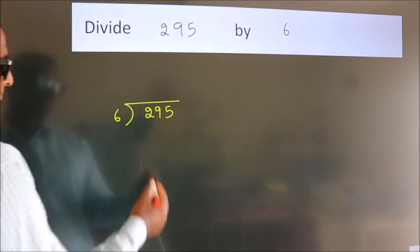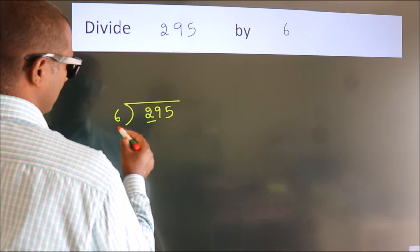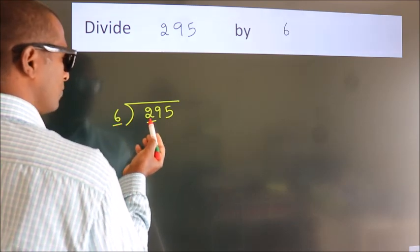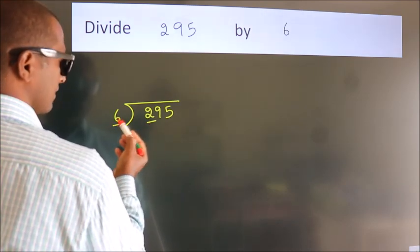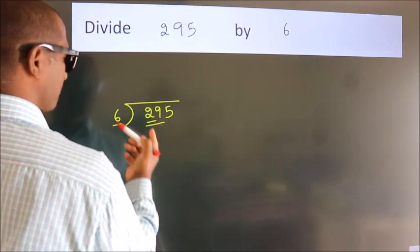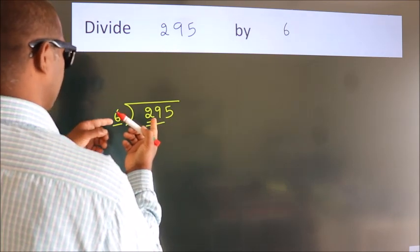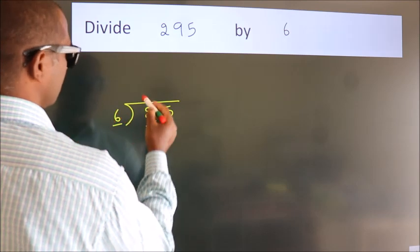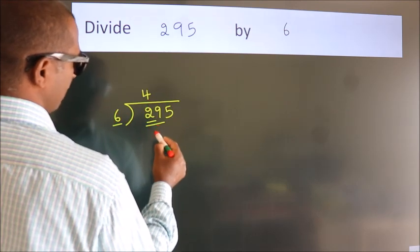Next, here we have 2. Here 6. 2 is smaller than 6, so we should take 2 numbers: 29. A number close to 29 in the 6 table is 6 fours, 24.